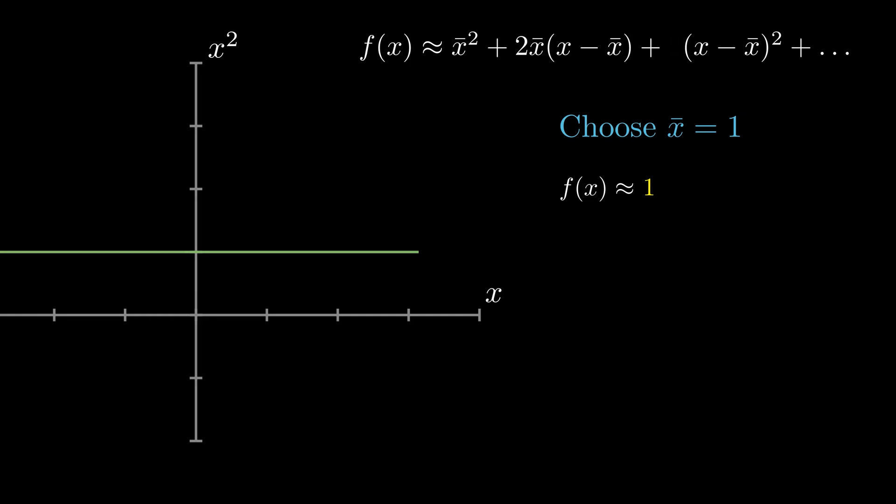We can then try adding the second term, so f(x) would be equal to 1 plus 2 times 1 times (x - 1), which in this case is going to give us this diagonal line here, which again doesn't look like x squared but again it does intersect the correct point at x equals 1.